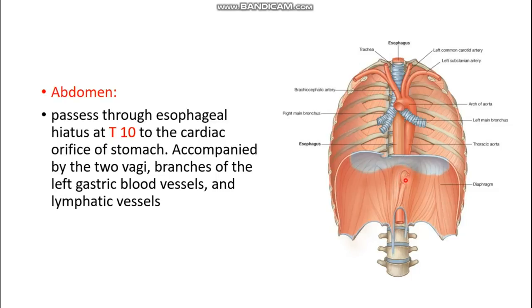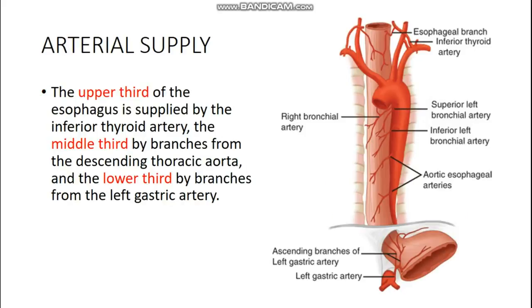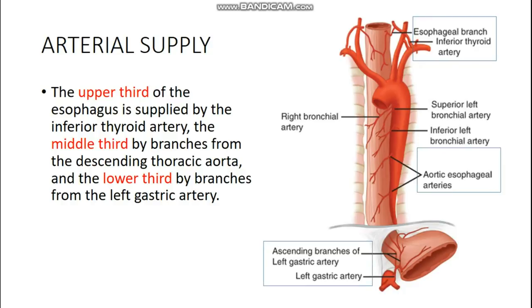The arterial supply of the esophagus varies by region. The upper third is supplied by the inferior thyroid artery. The middle third is supplied by esophageal branches from the descending thoracic aorta. The lower one-third is supplied by esophageal branches of the left gastric artery. So the arterial supply of the upper, middle, and lower thirds of the esophagus each have different sources.